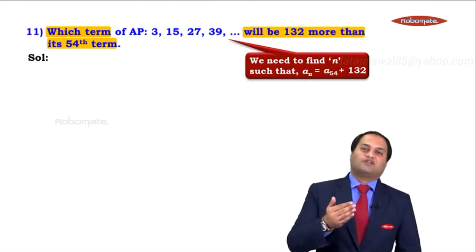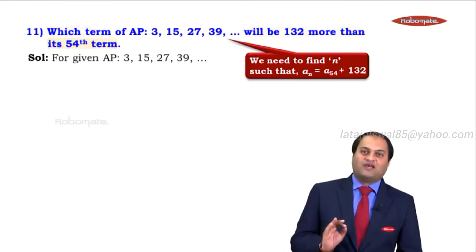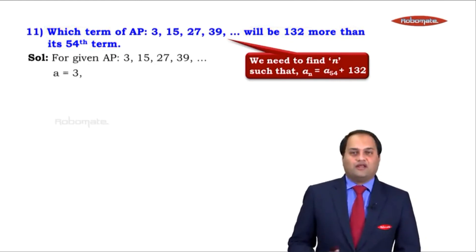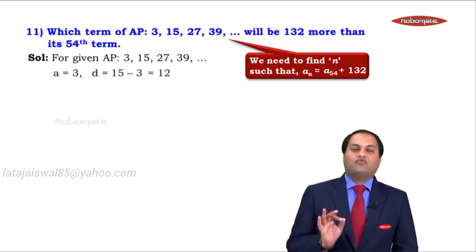Now with the help of this condition we are supposed to find the value of n. But before we do anything, as I always say, whenever an AP is given to you first write the values of a and d. Here a is equal to 3 and d is equal to 15 minus 3 which is equal to 12.